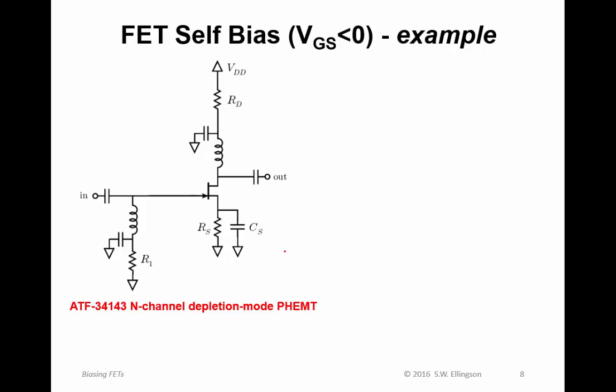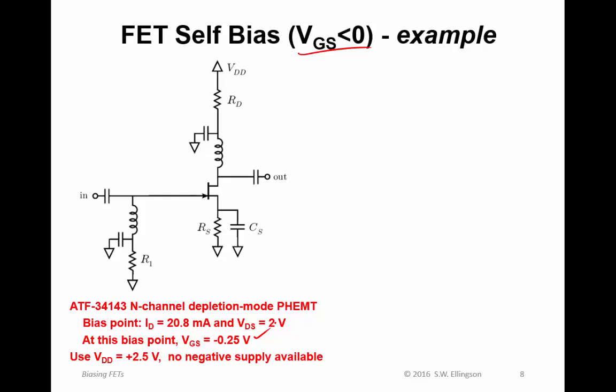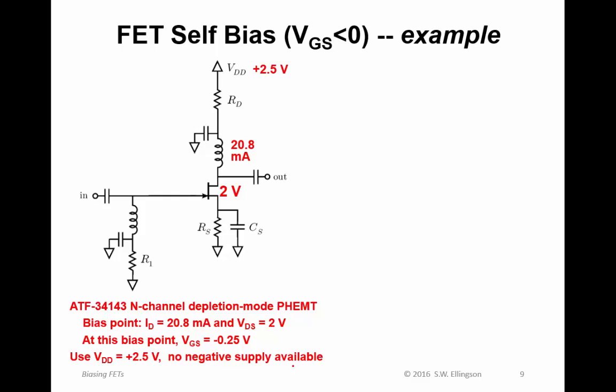Here's the example. In this case, I'm going to use the ATF-34143 N-channel depletion mode PHEMT. It's from the same transistor family as the previous example. But in this case, it's an N-channel depletion mode PHEMT that requires a negative gate source voltage to be used as an amplifier. The bias point will be 20.8 milliamps and 2 volts. At this bias point, we are told that V_GS is minus 0.25 volts. So we need the gate source voltage to be slightly negative. And we're also given that the supply voltage should be plus 2.5 volts. No negative supply available, so we're going to have to use the second technique.